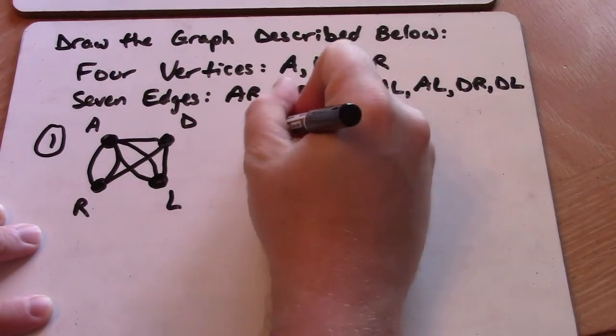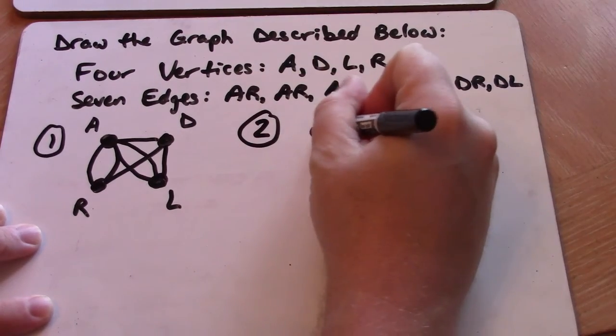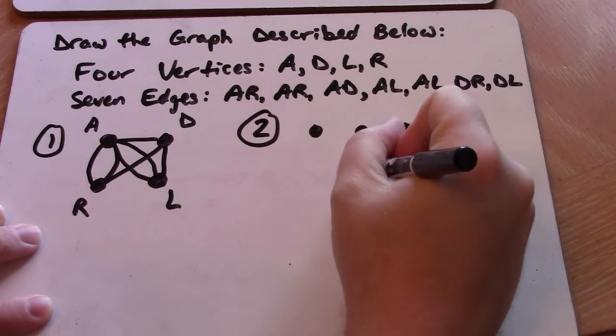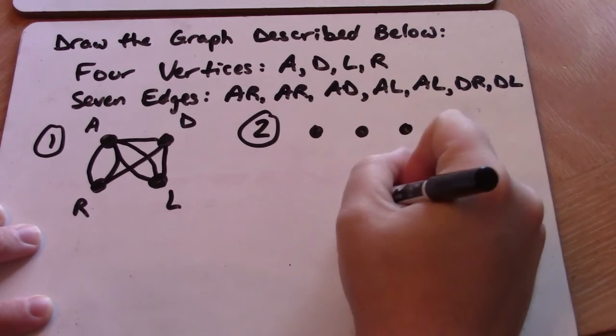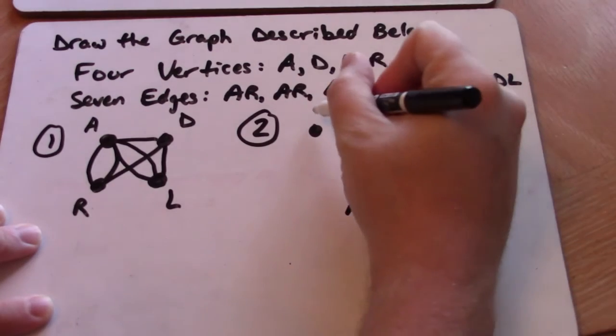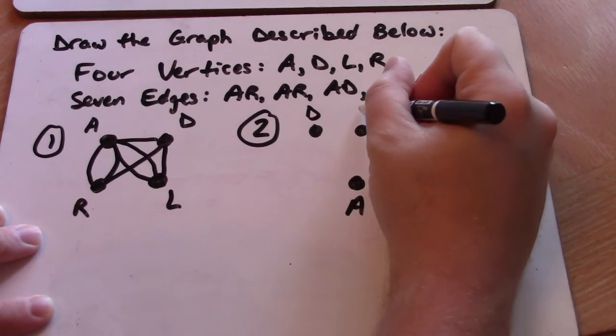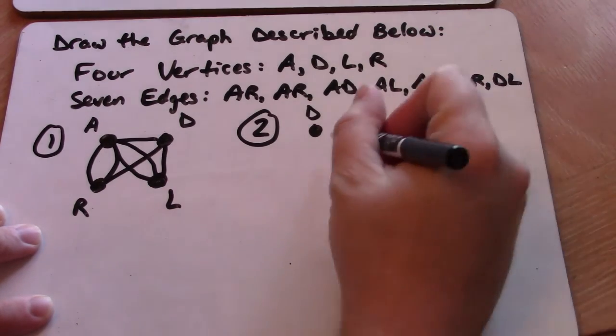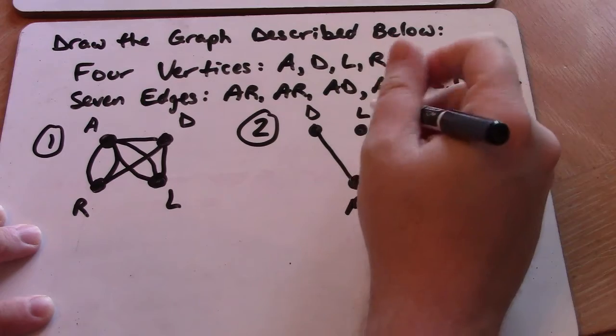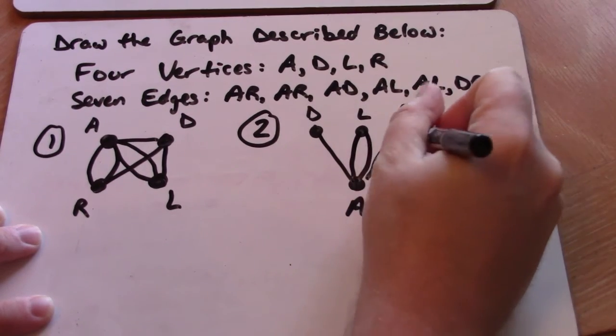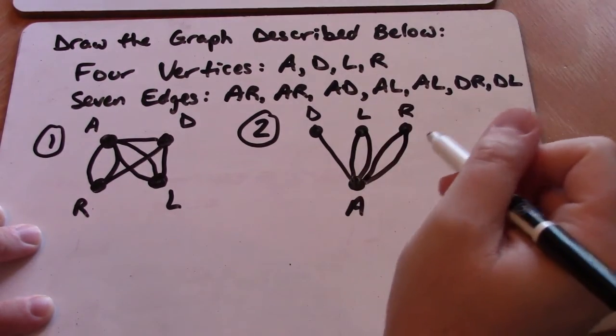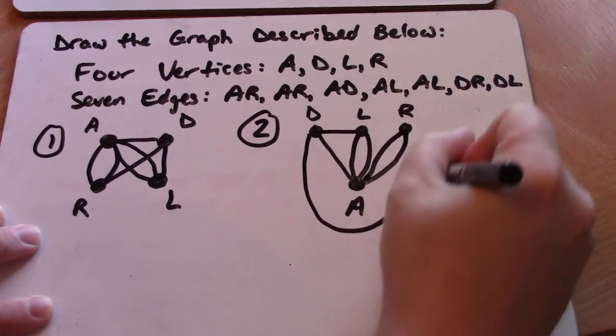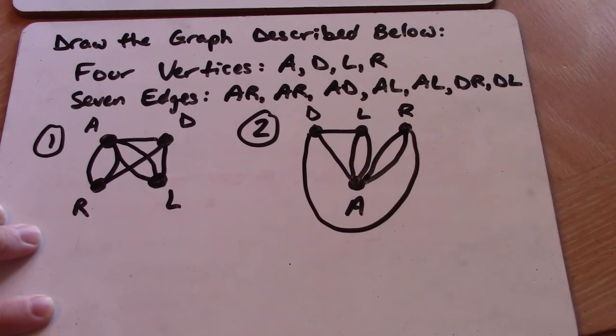However, it is not by any means the only way that you could have drawn this. I look at that graph and I see that a lot of the connections are made with A. So if I rearranged it just a little bit here, I could draw it in a whole other way. I could draw one edge from A to D, two edges from A to L, two edges from A to R, one edge from D to L, and one edge from D to R. This is a fully acceptable picture as well.